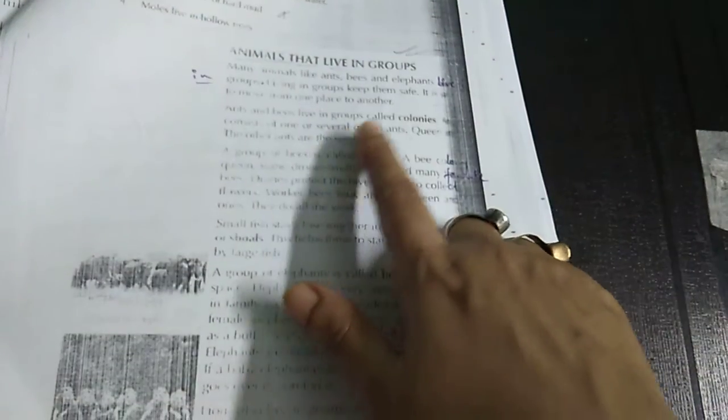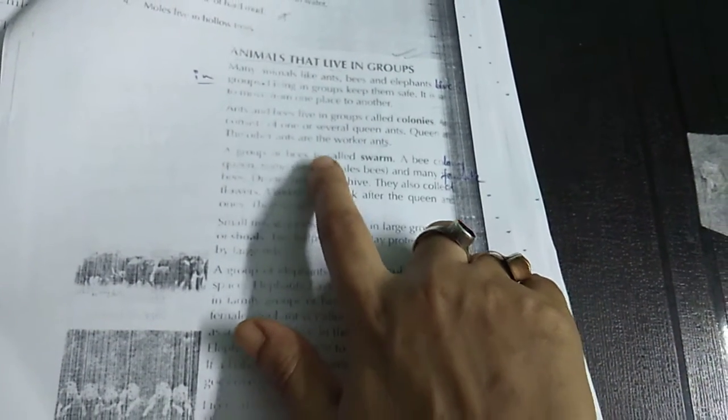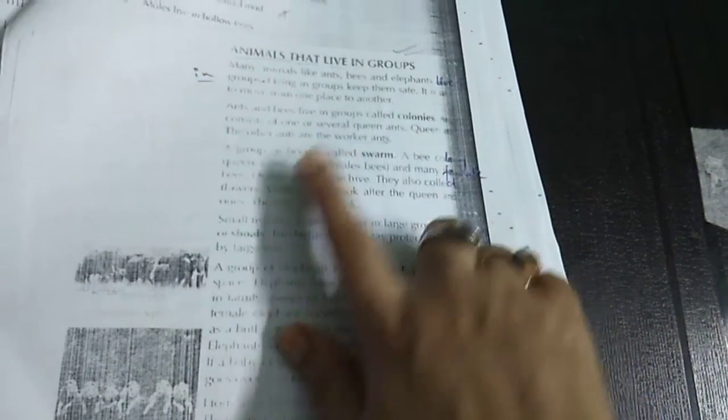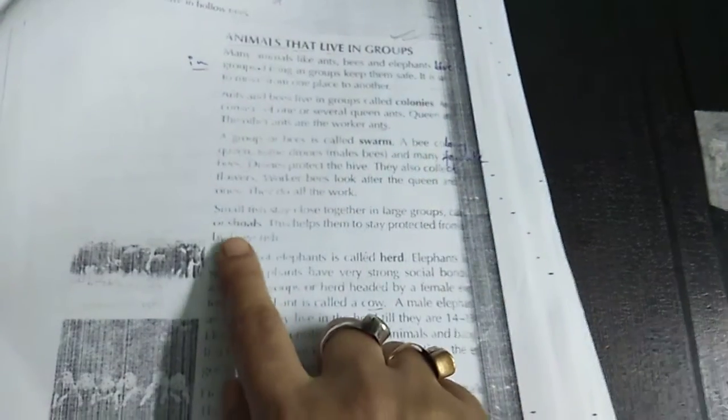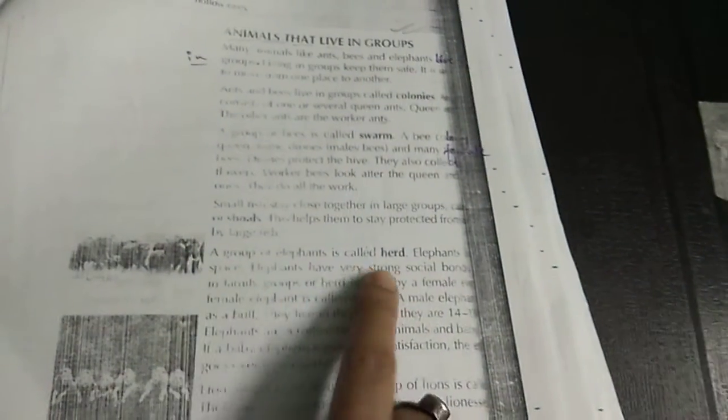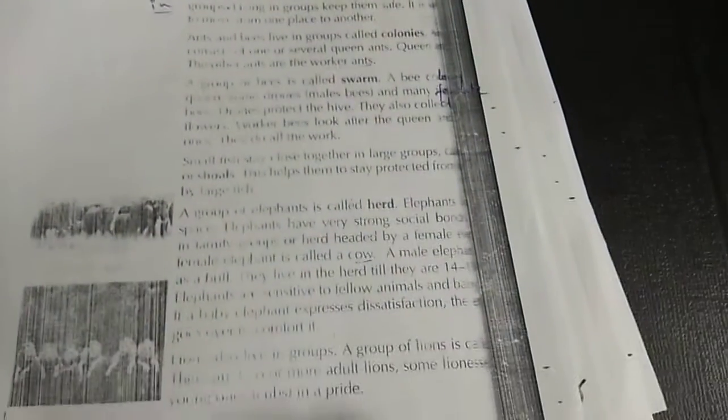What we can see? Group of bees or ant is known as colonies. Group of ant is colonies. Group of bees, swarm. Group of fish, shoal. Group of elephant, herd. These are all group. These are all group names.